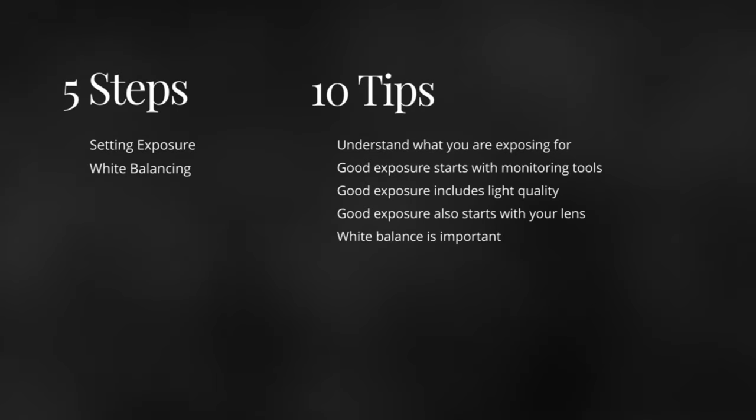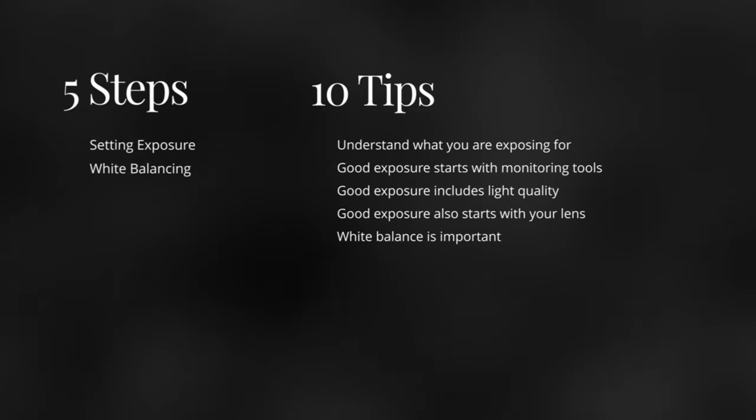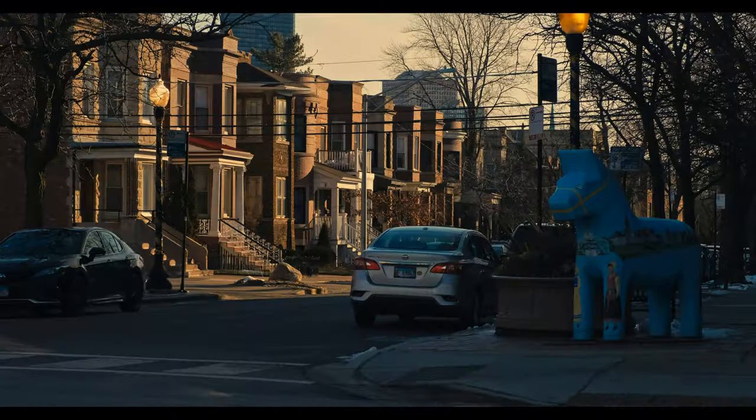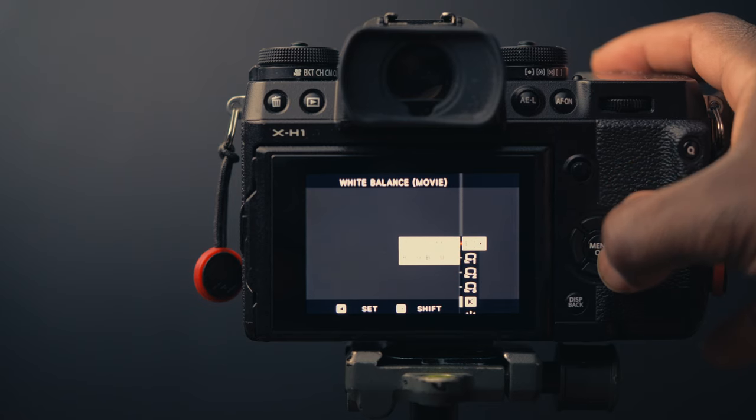Step two: balance your whites. Step two only has one tip and that is white balance is very important. I could have grouped white balance in with exposure, but it deserves its own full step. White balance is important because it will help when it comes to color separation when you are editing your footage. There have been numerous times where I got the white balance wrong in camera, especially in the Fujifilm X-H1, and when I got into post and tried to correct it, it just looked bad. Learn from my mistakes and wasted hours of recording, editing, and re-recording just to get it right.